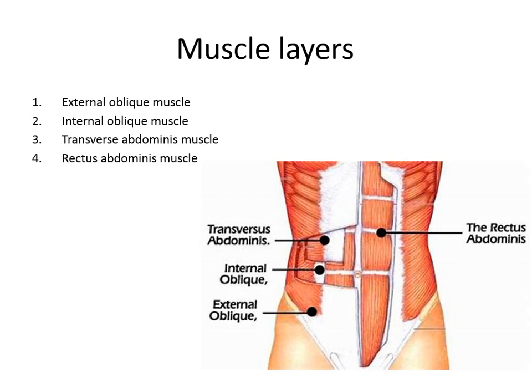The muscle layers of the abdomen have three important flat muscles: external oblique, internal oblique, transverse abdominus, and the rectus muscle on either side of the midline.